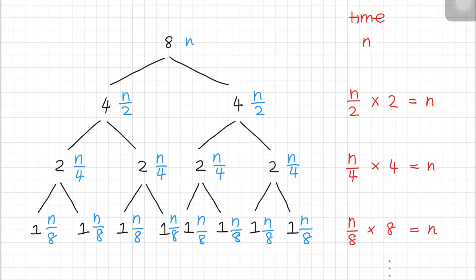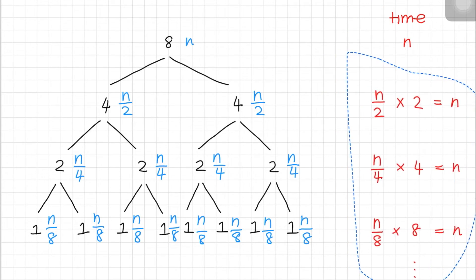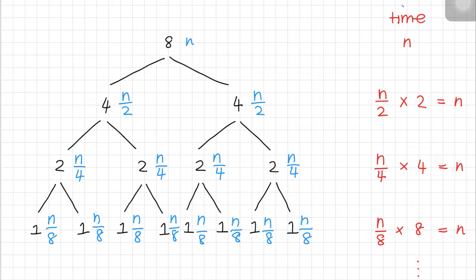First, let's look at the size of the array of each level. You'll probably notice that there's a pattern here. The topmost level is basically the size of the array, and it can be written in another form, which is n over 2 to the power of 0. This is basically n over 1, and n over 1 is n. In the second level is n over 2, which can be written as n over 2 to the power of 1.